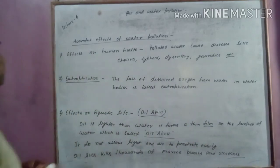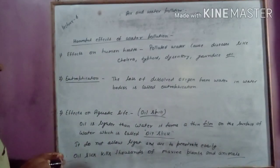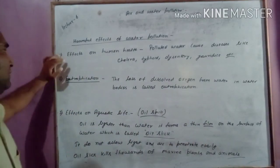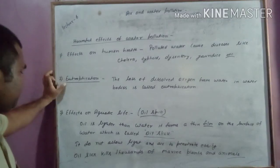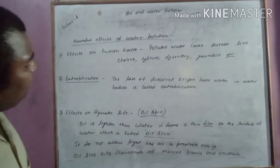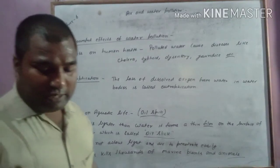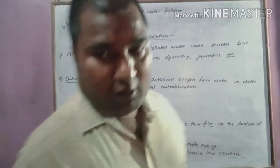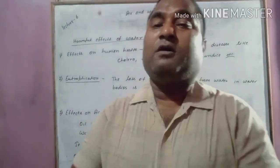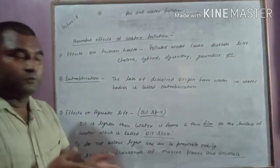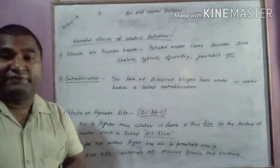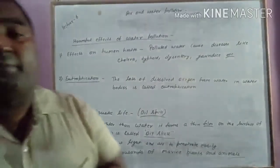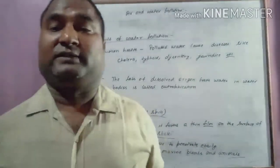So these are the harmful effects of water pollution: effects on human beings through diseases, eutrophication, and effects on aquatic organisms or aquatic life. Hope you understand. If you still have any problem, you can ask in the morning.